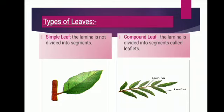There are two types of leaves: simple leaf and compound leaf. In a simple leaf, the lamina is not divided into segments — it is whole or entire, like in mango and sunflower. In the case of compound leaf, the lamina is divided into segments called leaflets, like in neem, rose and gulmohar — they all are examples of compound leaves bearing leaflets.